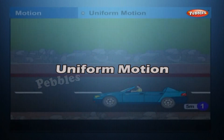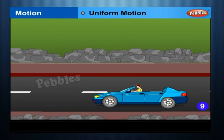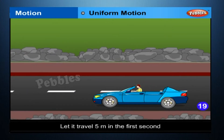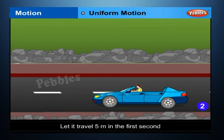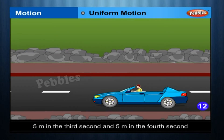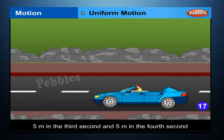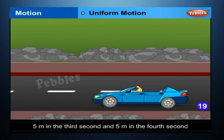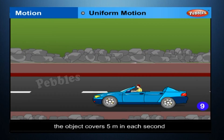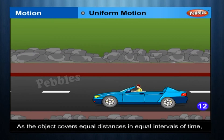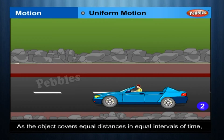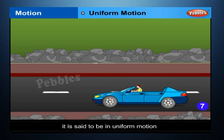Uniform Motion. Consider an object moving along a straight line. Let it travel five meters in the first second, five meters more in the second second, five meters in the third second, and five meters in the fourth second. In this case, the object covers five meters in each second. As the object covers equal distances in equal intervals of time, it is said to be in uniform motion.